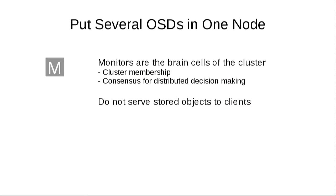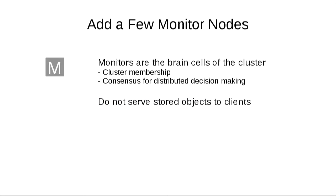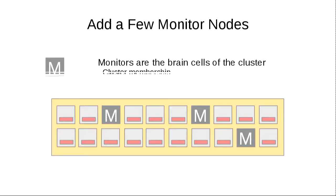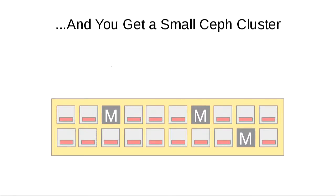Then you add a few monitor nodes, or mons for short. Monitors are the brain cells of the cluster — they know who's in and who's out. They do membership. They have a consensus algorithm for distributed decision-making. They don't serve stored objects to clients. They're the first point of contact for a client, but after that the clients talk directly to the OSDs. If you've got 17 storage nodes and three monitor nodes, you get a 20-node cluster that fits really neatly on one slide.